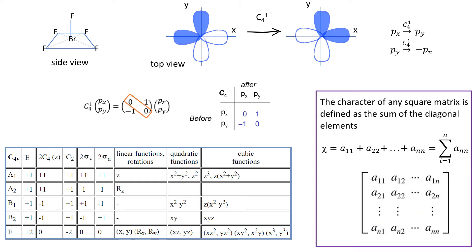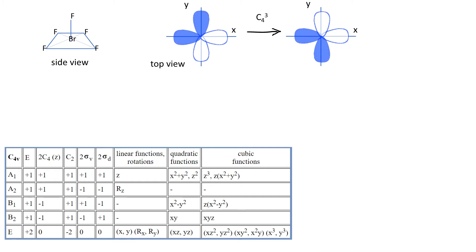Now there are two C4 rotations. The other is by 270 degrees. Now Px becomes minus Py and Py becomes Px. Different matrices, the same character.